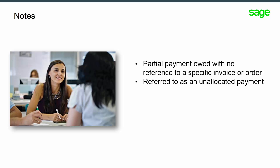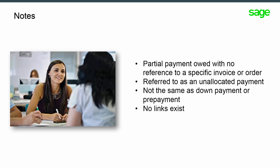If the Sage X3 user receives a payment from a customer or sends a payment to a supplier without making reference to a specific invoice, it can be designated as an unallocated payment. Unallocated payments or receipts should not be mistaken with down payments or prepayments that are linked to an order. Unallocated payments have no such link and do not involve VAT.